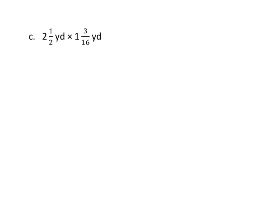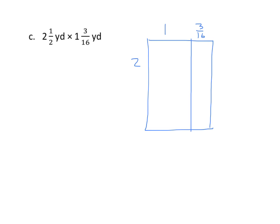One more example with yards. We now have two and one-half yards by one and three-sixteenths. Let's make our model. I have one and three-sixteenths — partition it. I have two and one-half — partition horizontally. Two times one is two. Two times three-sixteenths is six-sixteenths. One times one-half is one-half. And one-half times three-sixteenths is three-thirty-seconds. Now we'll find the sum. This time you'll notice all our denominators are unlike: two plus six-sixteenths plus one-half plus three-thirty-seconds.